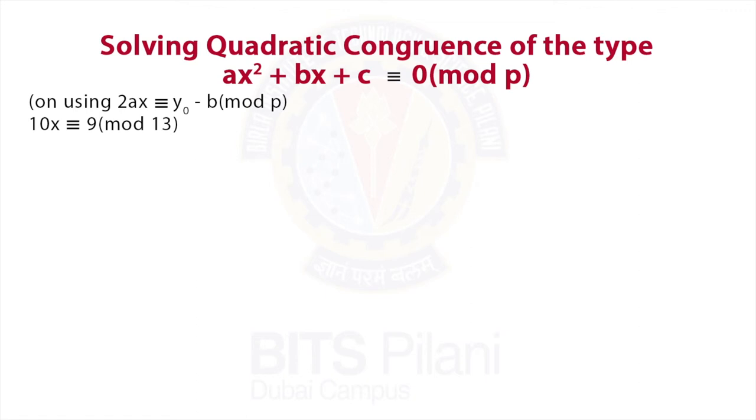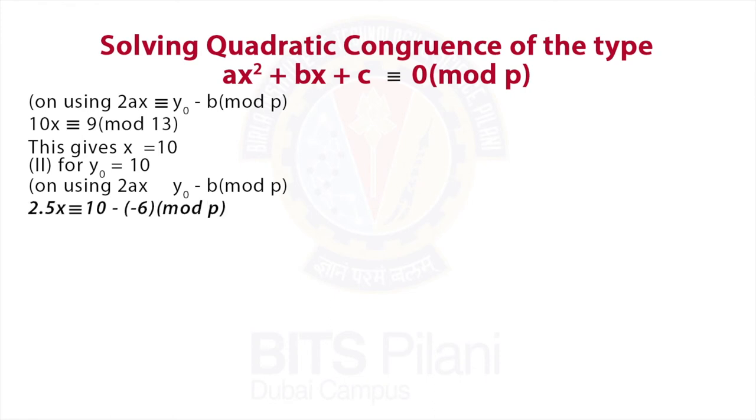If now we take the other value of y₀ which is 10 and use 2ax ≡ y₀ - b (mod p), we will get the congruence 10x ≡ 16 (mod 13), and x = 12 can be seen as a solution of this congruence.